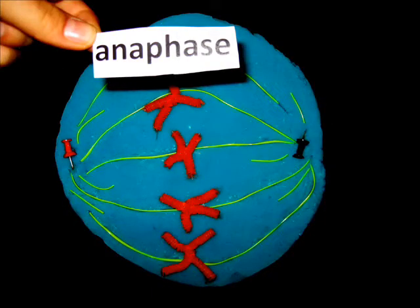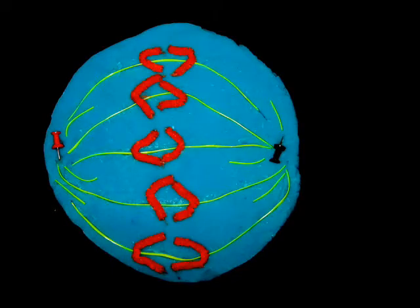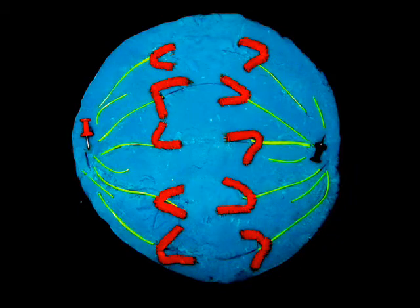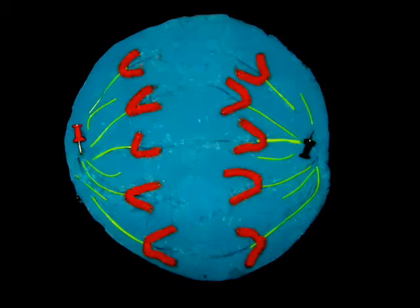The second to last stage is anaphase. This is when the spindle apparatus starts to shorten, pulling the sister chromatids by the centromere and causing them to split and separate into two identical chromosomes.